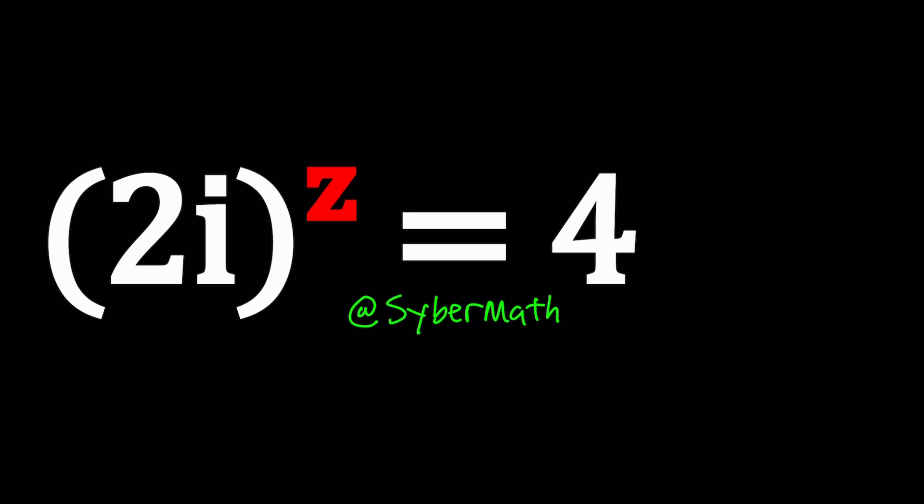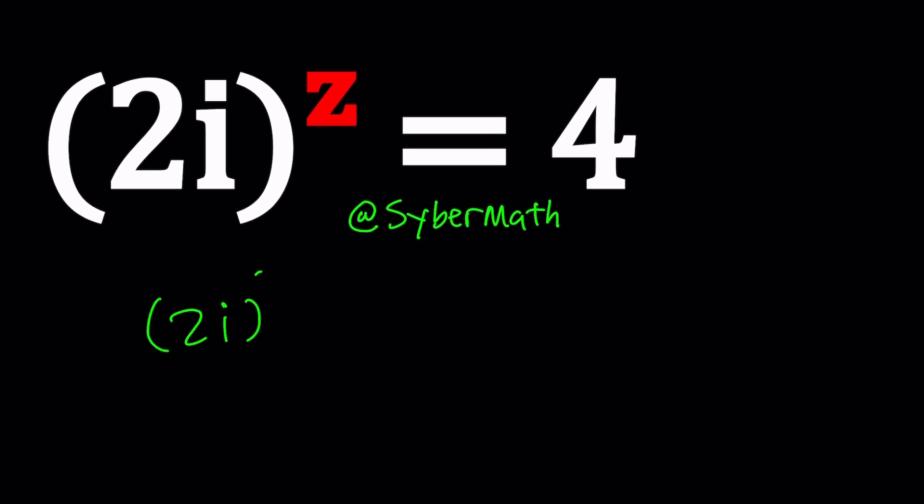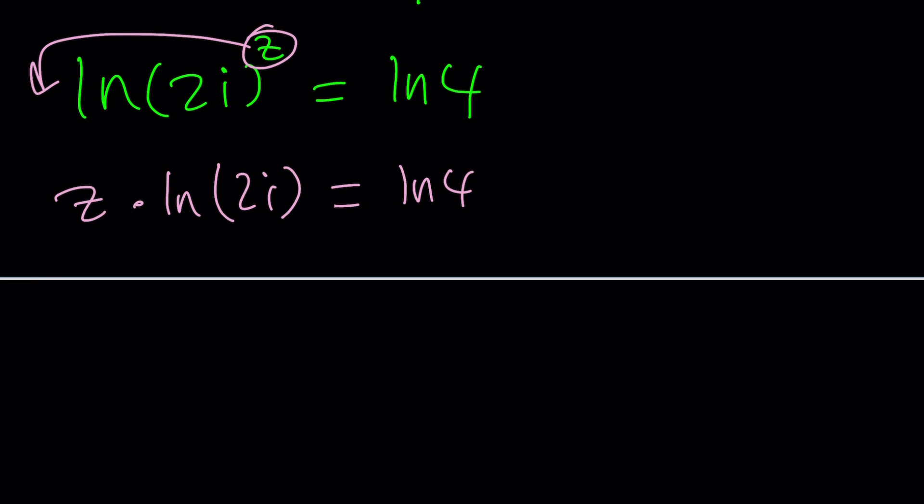So, how do we solve a problem like this? Can't we just ln both sides or natural log both sides? Sure, why not, right? Let's go ahead and do that. Because that's typically what's done when the variable is in the exponent. So, properties of exponents, you can bring this to the front. So, that should give us Z times ln 2i equals ln 4. And then Z should be ln 4 divided by ln 2i. The million dollar question is, what is ln 2i?